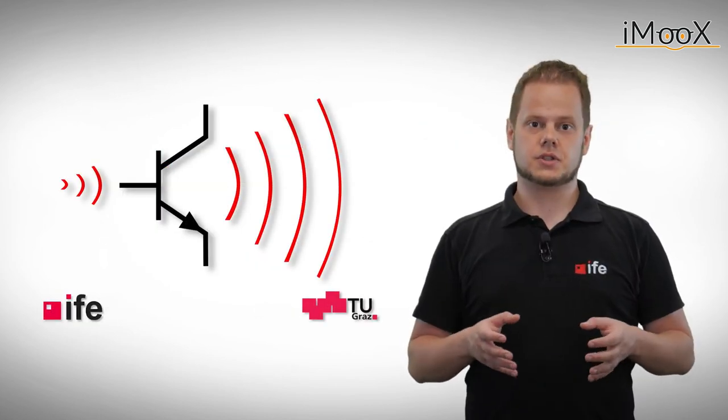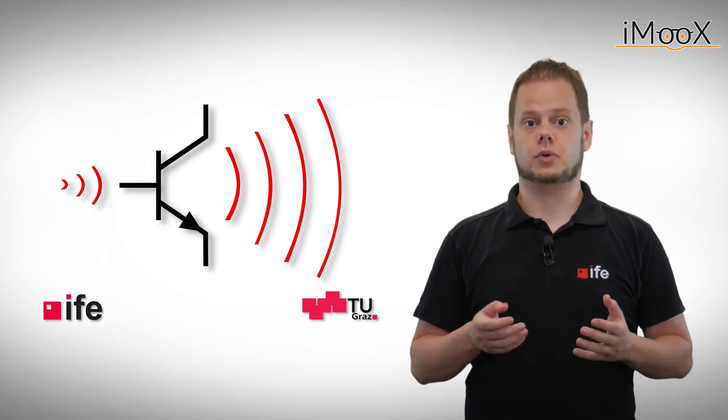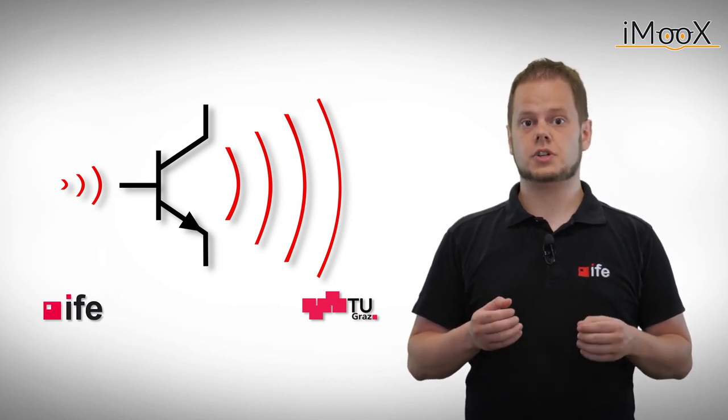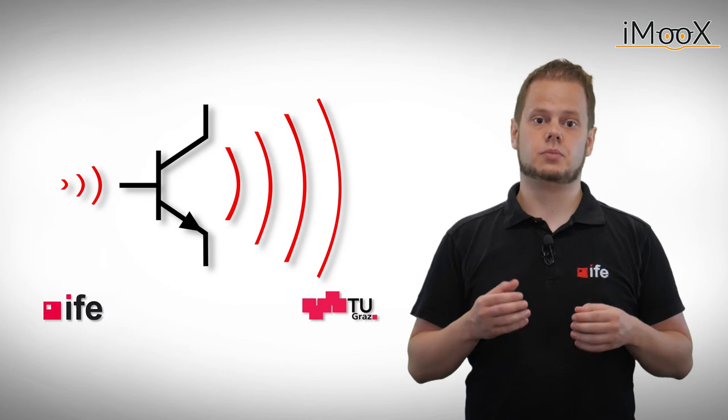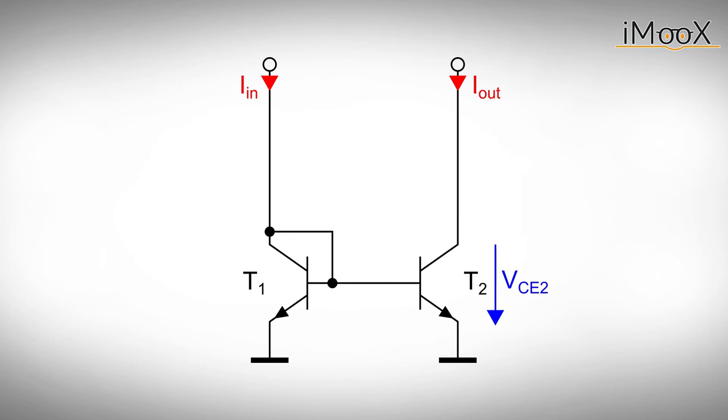Similar to the current source, the current mirror's output current depends on the voltage at the corresponding output. Fortunately, there are again some tricks to improve the stability of our output current. Again, we want to keep the collector emitter voltage constant at the current controlling transistor. One thing we could do is add a transistor like this.